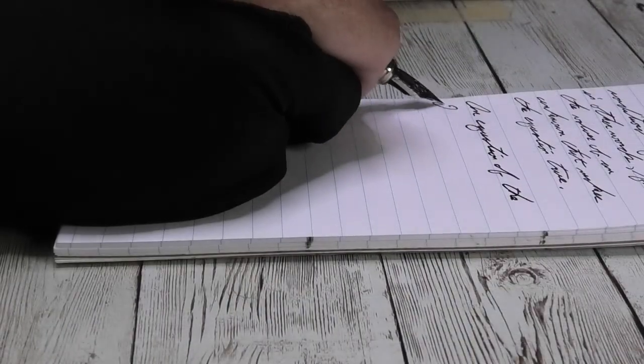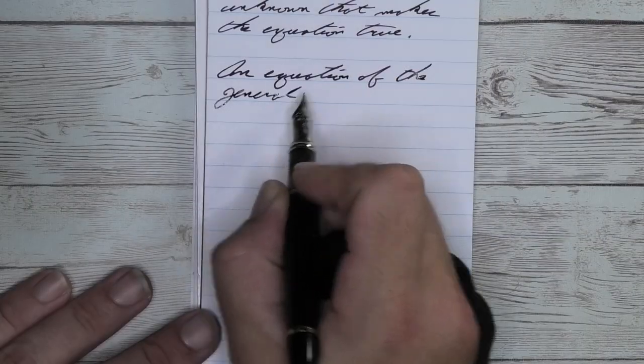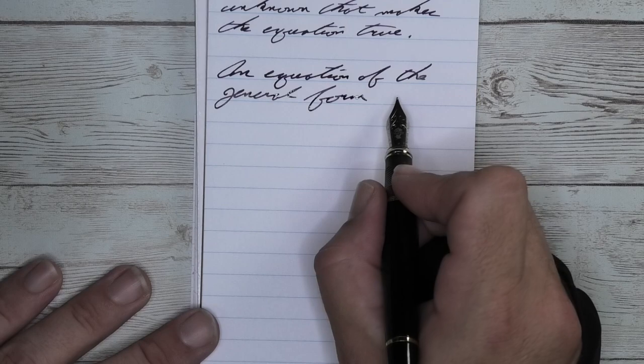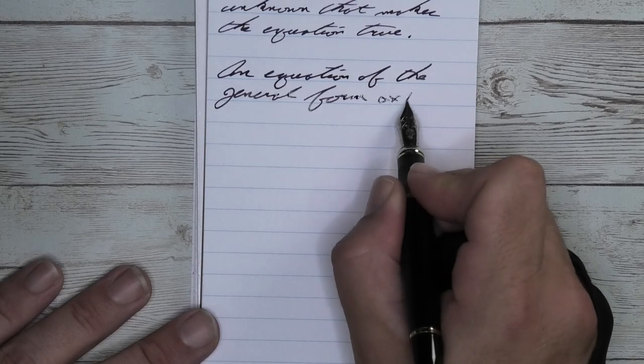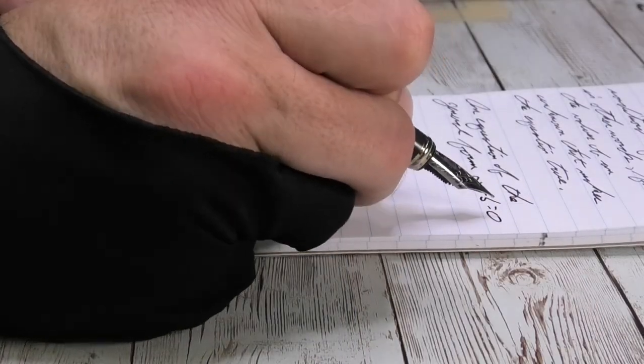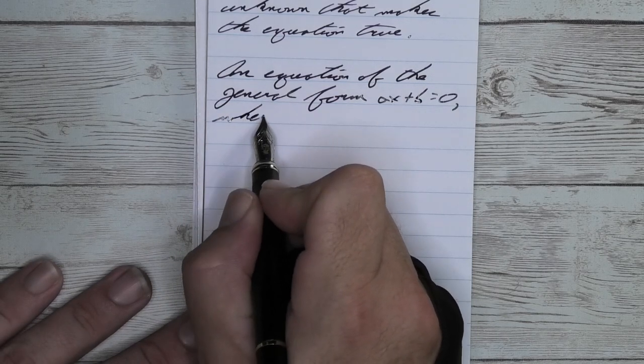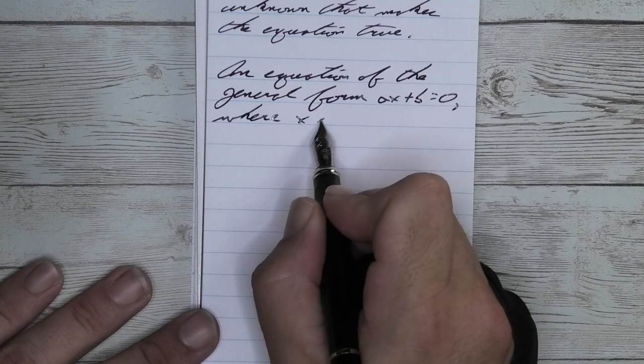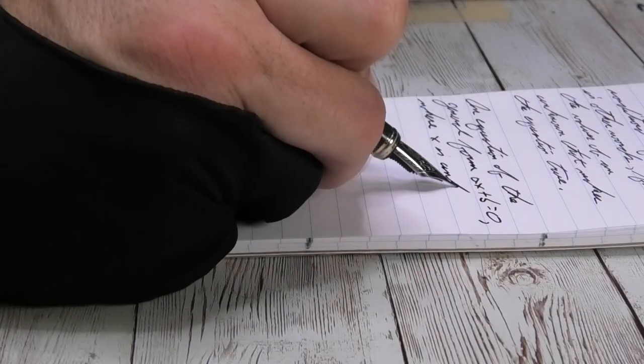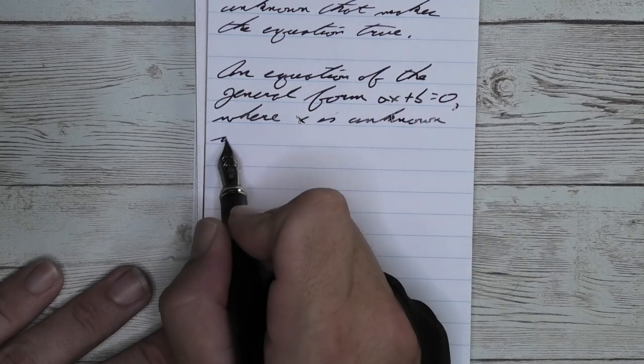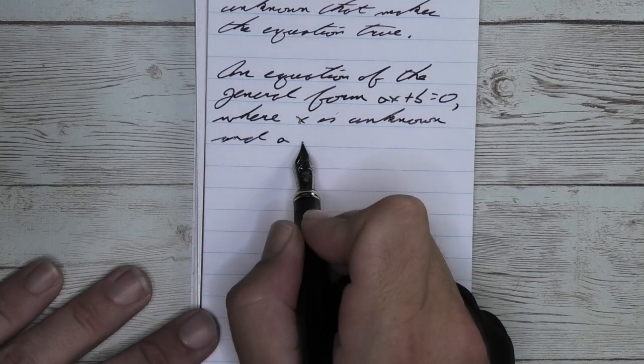Looking at the medium nib, a bit darker than what we had with the fine, still holding on to that purple without any issues. We get no feather, no spread. We do get a little more tone variation. In the word equation, the E is darker than the Q and then it lightens up at the UAT and then gets darker at the ION. Nice shading going on and that occurs a few different places, so I'm going to say it shades here pretty well.